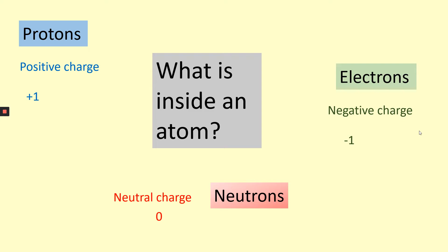The next property we're going to look at is the mass of each particle. A proton has a mass of one. For an electron, we say it has a very small mass. A neutron has exactly the same mass as a proton — a mass of one.